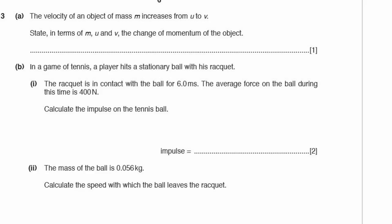Question 3. The velocity of an object of mass m increases from u to v. State, in terms of m, u, and v, the change of momentum. Momentum equals mass times velocity, so the change in momentum = mv − mu. Make sure your v and u are clearly distinguishable in your writing.